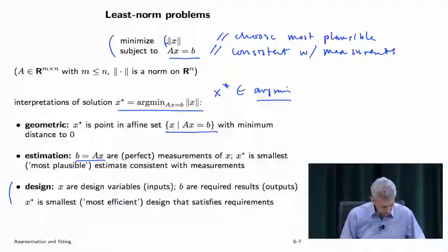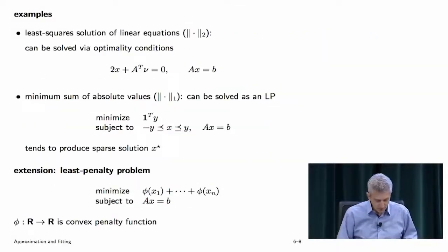One nice thing about our approach — simply recognizing this as a convex problem — is that you can mix and match. If someone comes back and says they need to add constraints, like the X's have to be between plus and minus one, it's not a big deal. We just add those constraints.